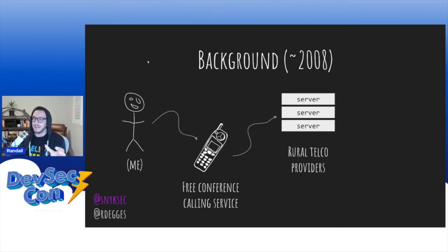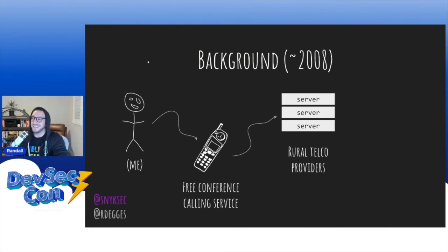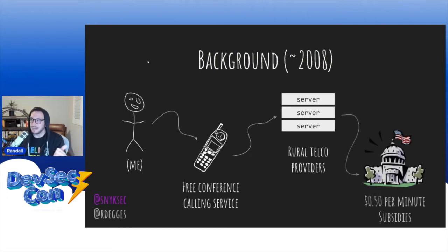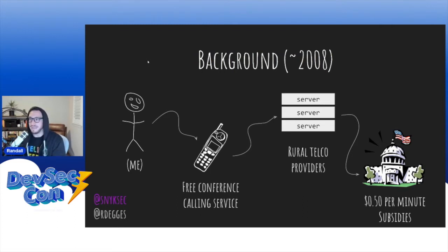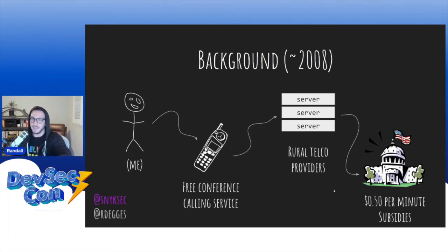On the back end, we partnered with rural telecom providers out in the middle of nowhere across the US — places like Copley, Pennsylvania or Lufkin, Texas, where you have to fly into a big city, rent a car, and drive for a few hours. These rural providers were incentivized by the US government to build out infrastructure by getting paid a certain amount per minute for phone calls. So the government would say: if you set up service in the middle of nowhere Texas, we'll pay you 50 cents per minute for any call that comes into your local telecom.